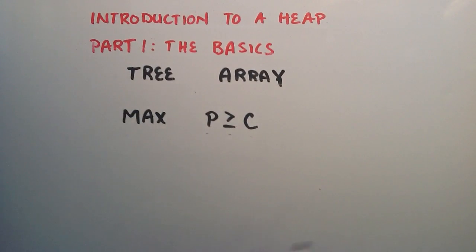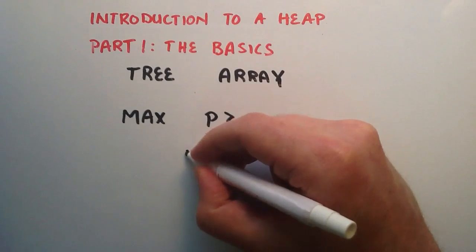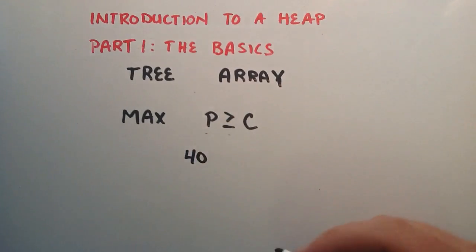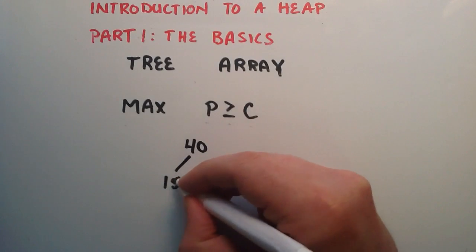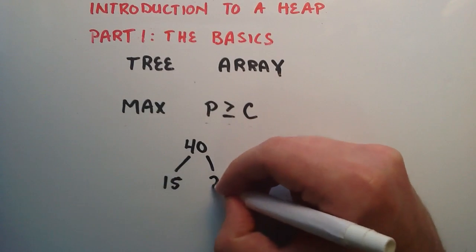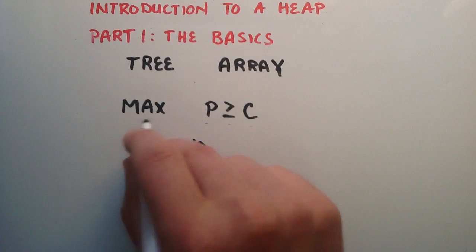So if I was to just go ahead and draw out a max heap here, I could just choose the number 40 here, and that will be my root. And then I can put 15 as the left child, and 20 as the right child. I'm just picking random numbers that are less than the parent, so we keep the max heap condition.